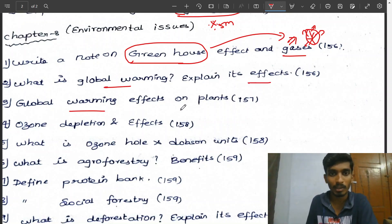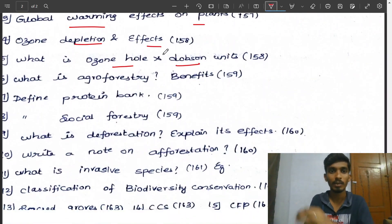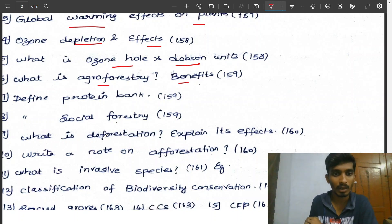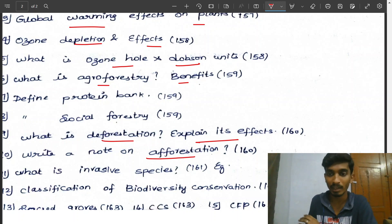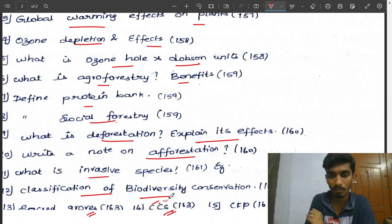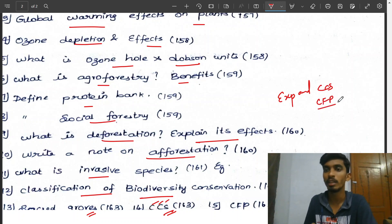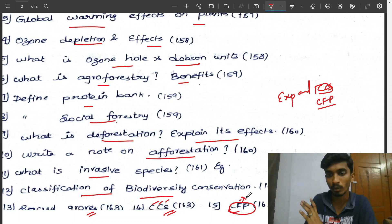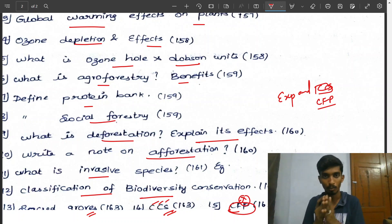What is global warming? Explain its effects. Next: global warming effects on plants. Ozone depletion and effects. Ozone hole and Dobson unit — definition. Agroforestry: benefits from deforestation and effects, afforestation — one repeated question. Rainwater harvesting (RWH) — four questions, one repeated. Protein bank, social forestry definition, invasive species definition — very important. Classification of biodiversity conservation — flowchart. Sacred groves. CCS — Carbon Capture Storage — expand the abbreviation. Carbon footprint — definition.